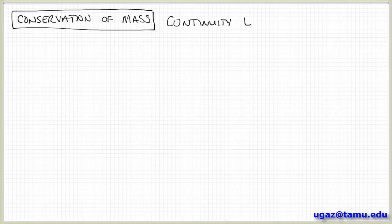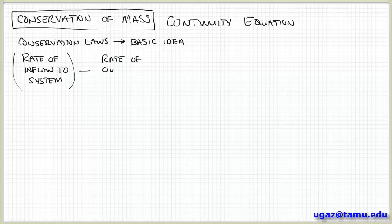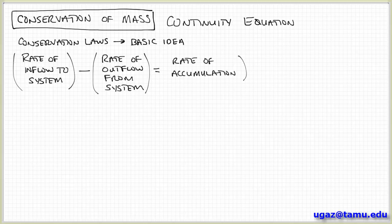In this series of videos we're going to begin looking at some of the fundamental conservation laws associated with fluid mechanics. This is a very important topic because these conservation laws lay the foundation for the governing equations that we're going to use to describe fluid flow. The basic concept of a conservation law expresses a relationship between the rate of inflow, the rate of outflow of material from the system, and the rate of accumulation of a quantity inside the system. It's basically an accounting-type relationship: input minus output equals accumulation inside the system.